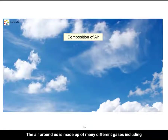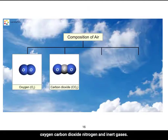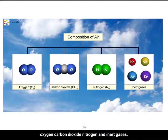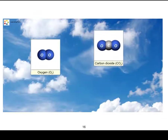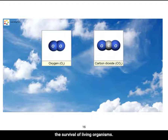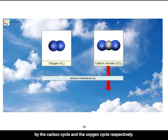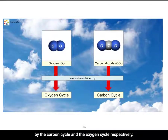The air around us is made up of many different gases, including oxygen, carbon dioxide, nitrogen, and inert gases. Oxygen and carbon dioxide in particular are important for the survival of living organisms. The amount of these gases in the atmosphere is maintained by the carbon cycle and the oxygen cycle, respectively.